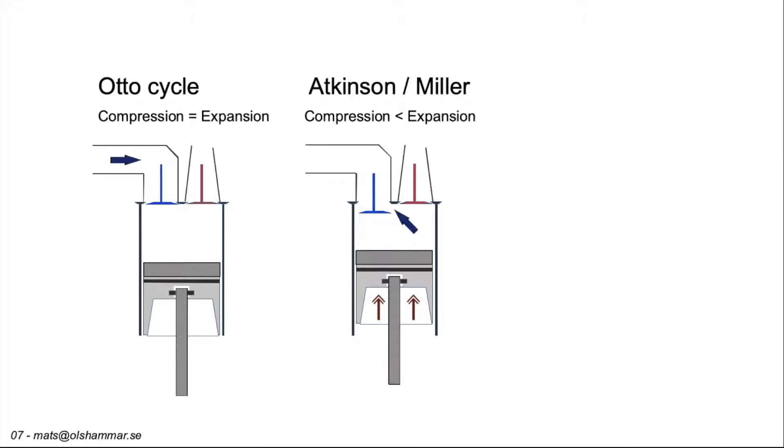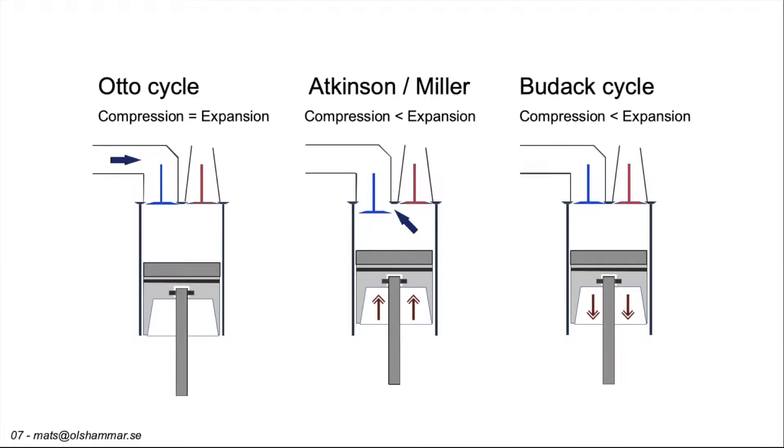The Miller cycle is the Atkinson cycle with supercharging to compensate for less power than the Otto cycle. The Budak cycle closes the intake valve earlier so there is less air to compress and the result is similar to the Atkinson and Miller cycles.